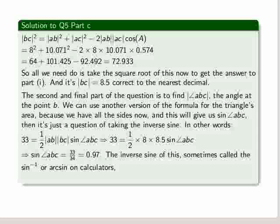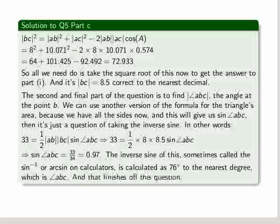Now the inverse sine of this, sometimes called the sine to the minus 1 or the arc sine on calculators, is calculated as 76 degrees to the nearest degree, which is ABC. And that finishes off this question. Thanks for your attention.